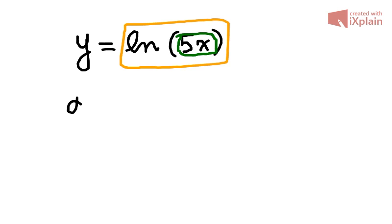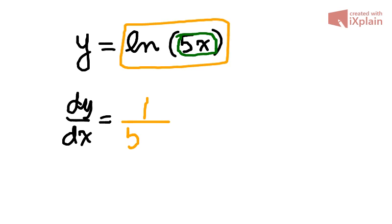The derivative of y with respect to x using inspection will be the derivative of the outer function, 1 over 5x, multiplied by the derivative of the inner function, which is just a linear function, so 5.